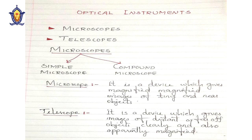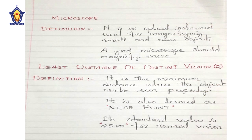Another important optical instrument is the telescope — it is used to see distant or far off objects clearly and apparently magnified. We will discuss the telescope later. The important property of a microscope is magnification: from a microscope we get magnified images of tiny or very small objects. A good microscope should magnify more.